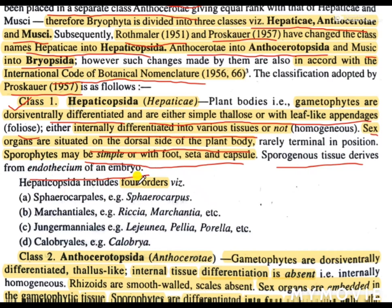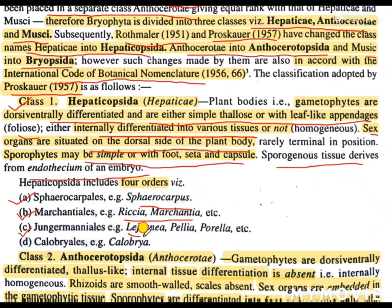This class Hepaticopsida includes four orders. Number one: Sphaerocarpales, for example genus Sphaerocarpos. Number two: Marchantiales, for example genera Riccia and Marchantia, which are very commonly known bryophyta. Number three: Jungermaniales, with some genera such as Pellia, Porella, Legunia, etc. Number four: Calobryales, with a genus known as Calobryum.